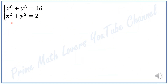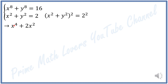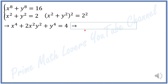First, I write x squared plus y squared, to the power of 2, is equal to 2 to the power of 2. From this equation, using binomial expansion, I get x⁴ plus 2x²y² plus y⁴ is equal to 4.